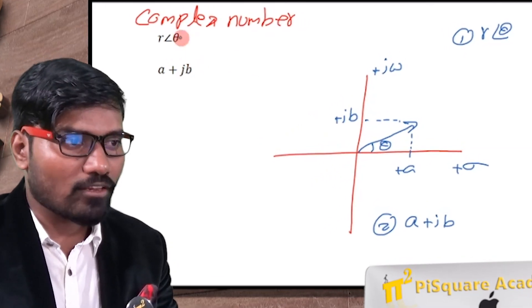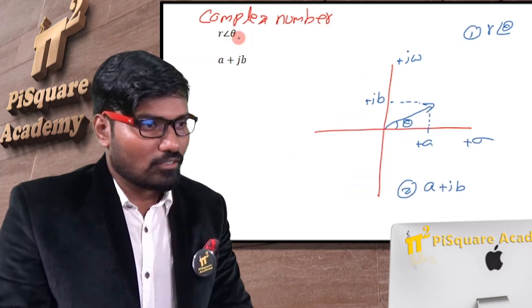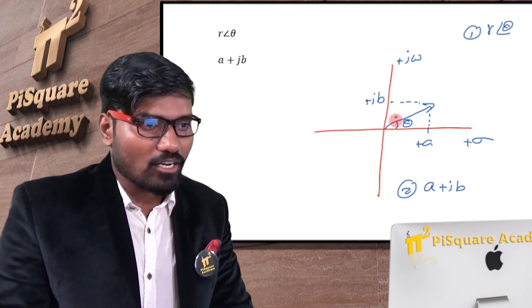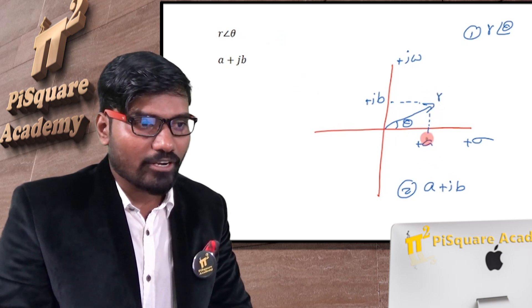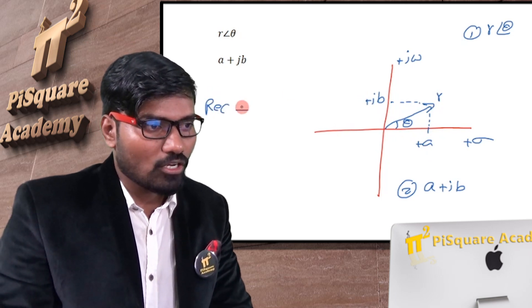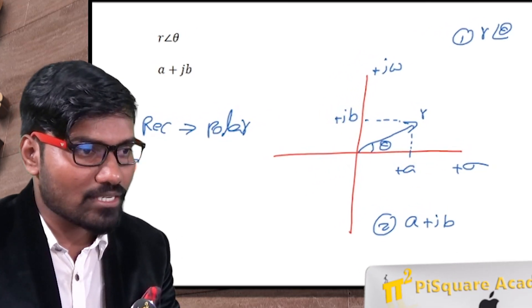Now let's see how to convert one form to another form by using basic scientific calculator in which you don't have a direct conversion. So from this diagram, you can directly say what is the value of this r, magnitude of this r? If I know a and b values, so I want to convert rectangular to polar form. If I know a and b values, that is a plus jb is known, I want to find the polar form.